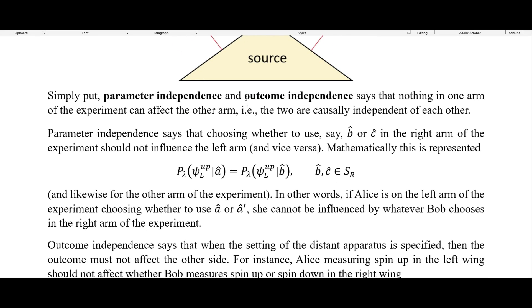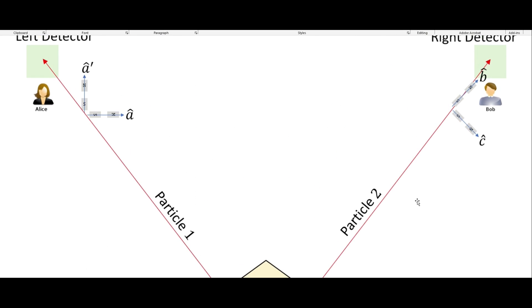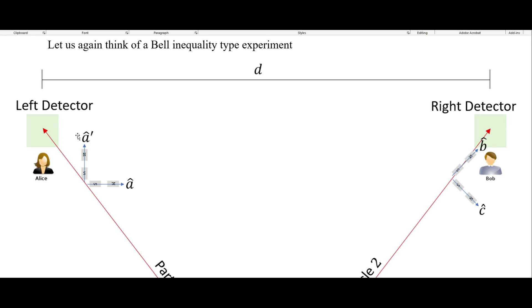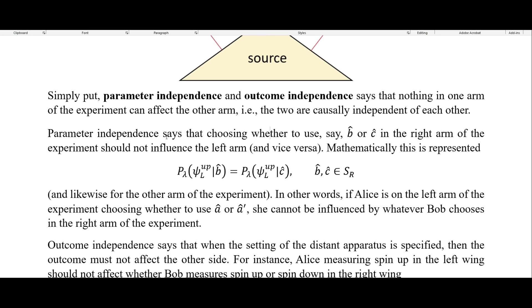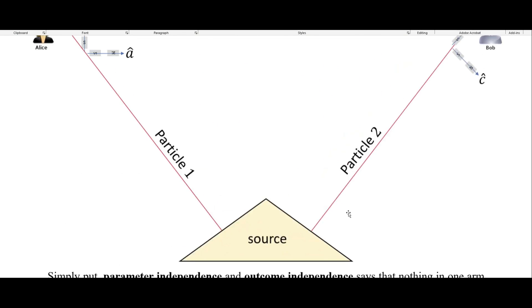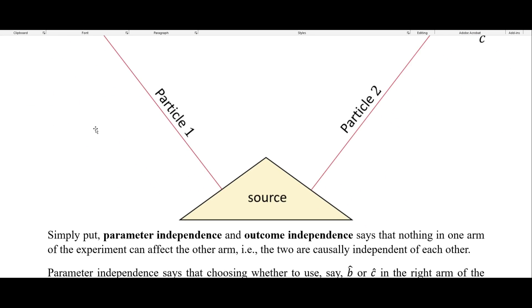Simply put, parameter independence and outcome independence says that nothing in one arm of the experiment can affect the other arm — in other words, the two are causally independent of each other. That is what we want when doing a Bell inequality type experiment, because we want complete plausible deniability about any sort of interaction happening between the two arms that could be explained in a relativistically causal way. Parameter independence says that choosing whether to use B or C in the right arm should not influence the left arm, and vice versa — whether Bob chooses B or C should not influence whatever happens on Alice's side.